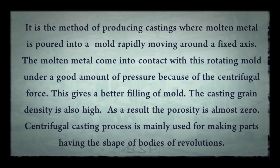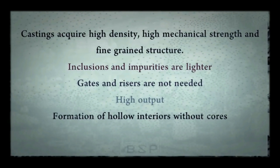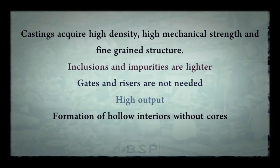It is mainly used for making parts having shapes of bodies of revolution. The advantages of centrifugal casting are: the castings require high density, high mechanical strength, and fine grain structure. Inclusions and impurities are lighter. Gates and risers are not needed. We get high output and we can form hollow interiors using centrifugal casting. The final product has high mechanical strength and high density.